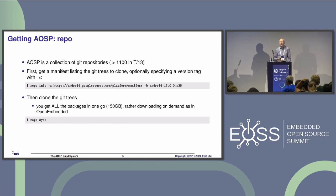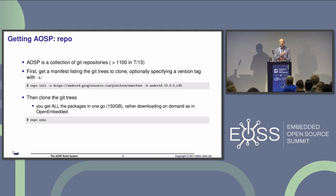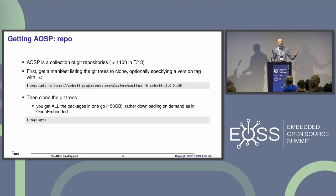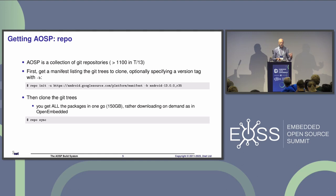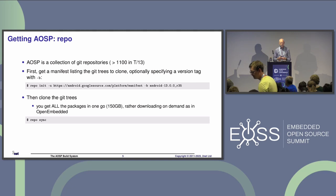Just a quick recap to make sure we're all on the same page. The AOSP source code is a large collection of Git repositories — over 1,100 now. You begin by getting repo, then use `repo init` to get the manifest, which is an XML file listing all the Git trees you want to clone. You do repo init with the appropriate options, giving a tag such as Android 13 release 35. That downloads the manifest quickly.